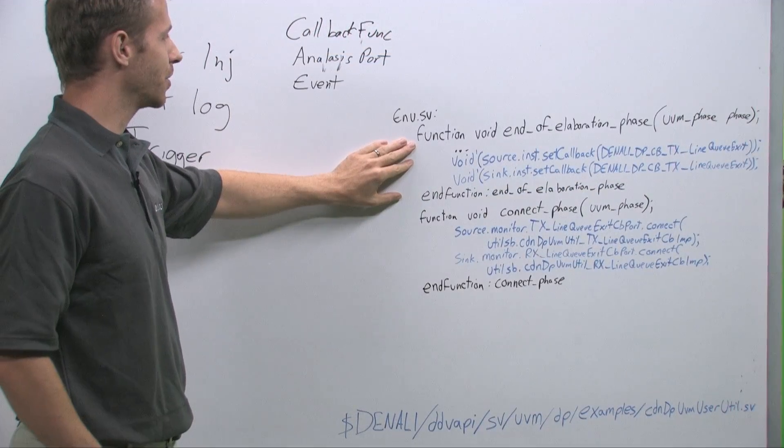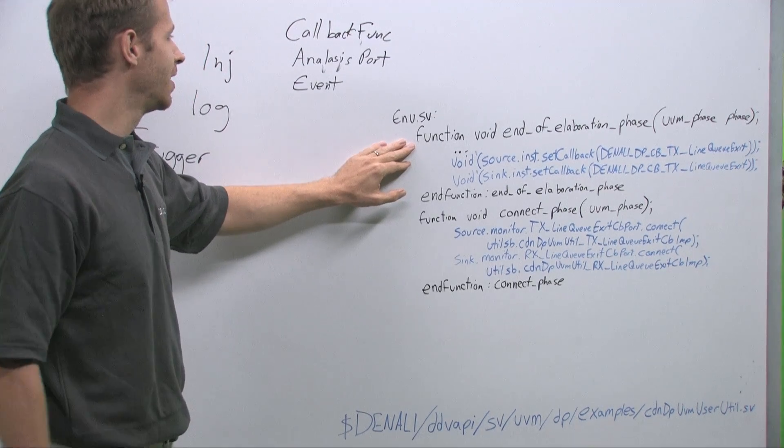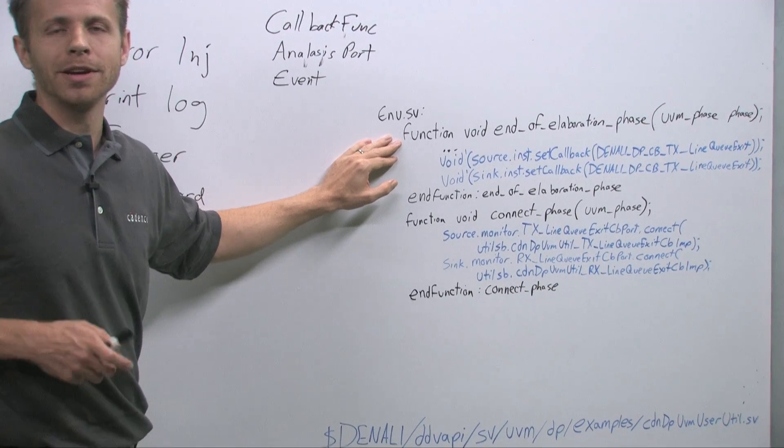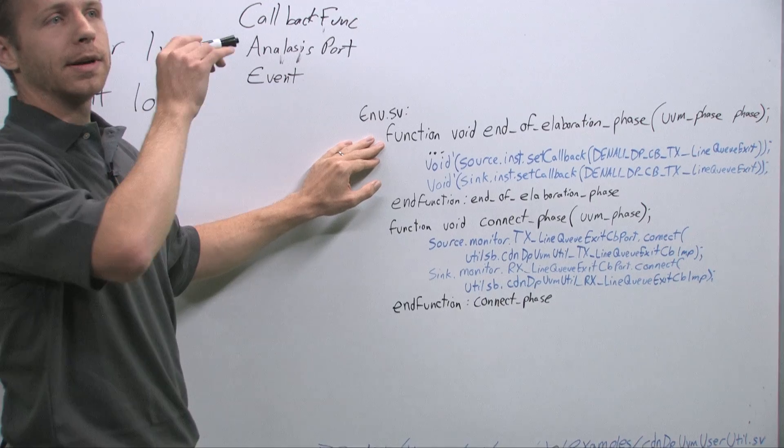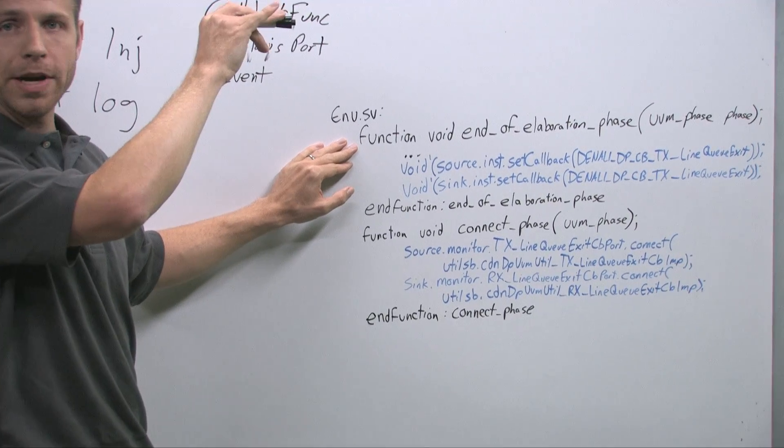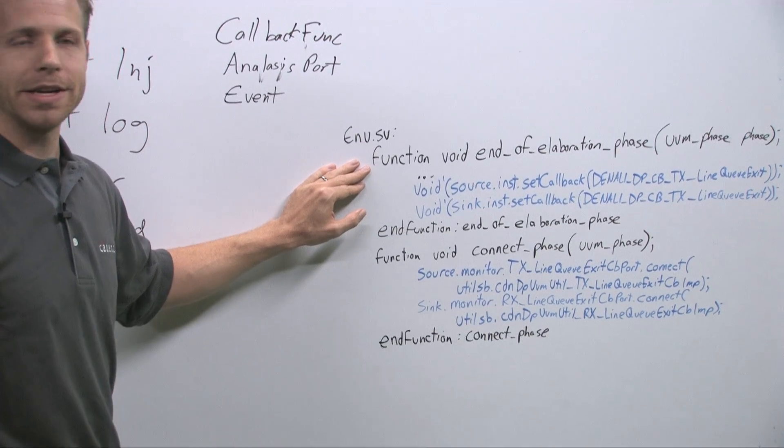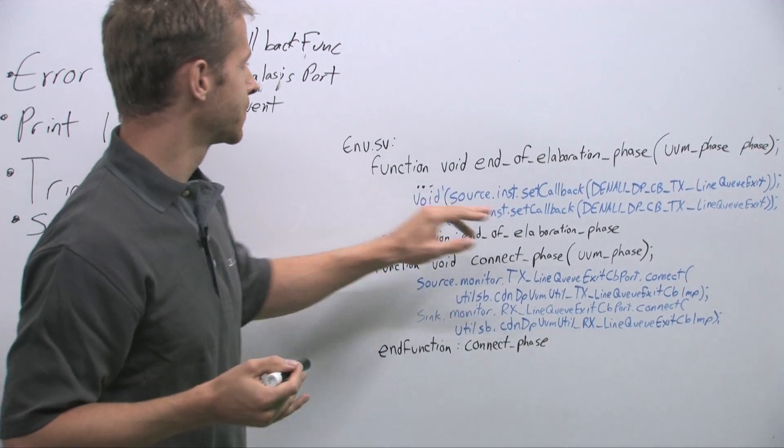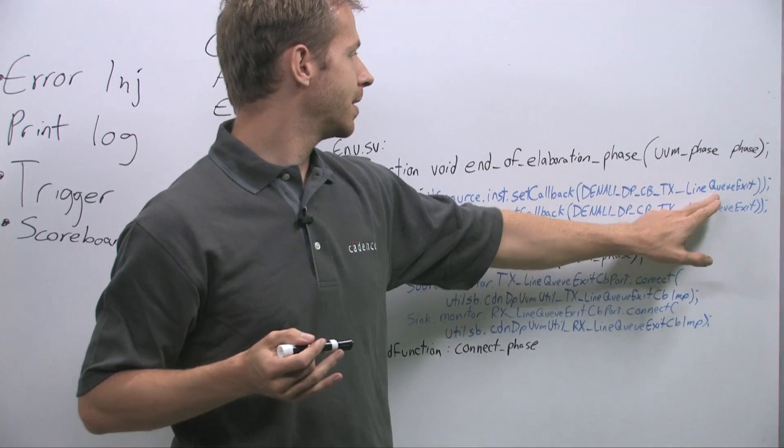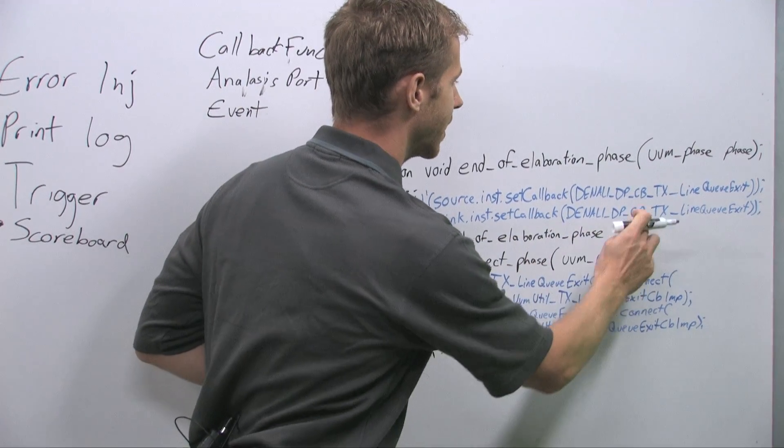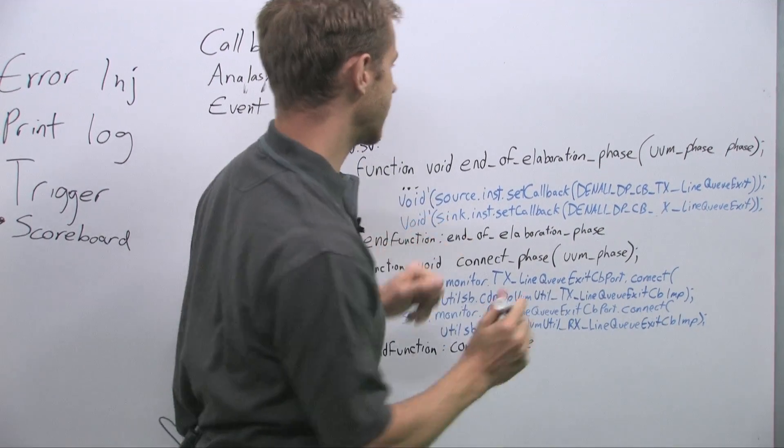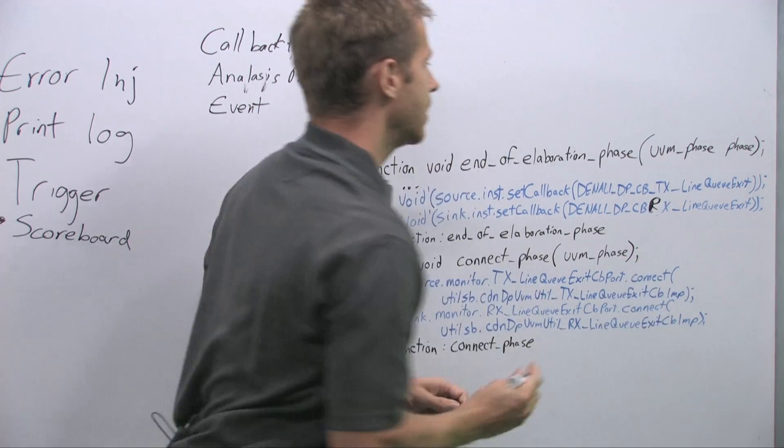Right here I have some code showing how you enable the callback. In our case we're doing DisplayPort. We have a source agent and a sync agent. The source agent is going to be transmitting data to the sync and we're going to capture it at the TX line queue exit. We want the sync to capture it at the RX line queue exit.